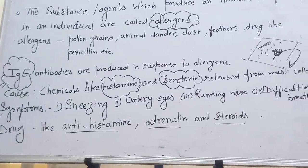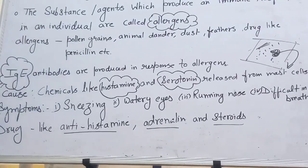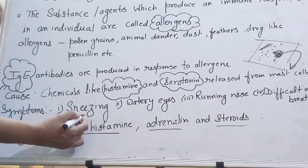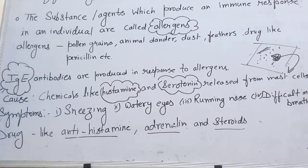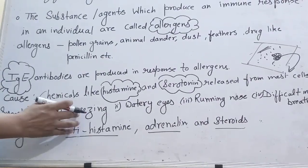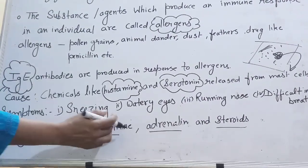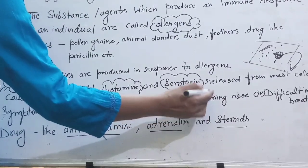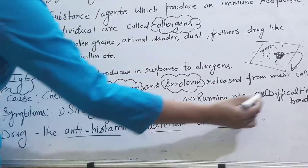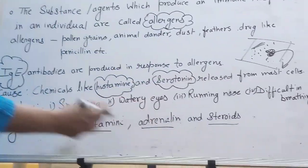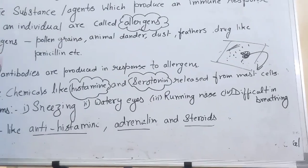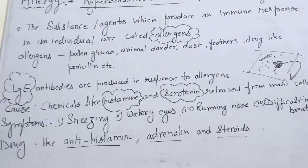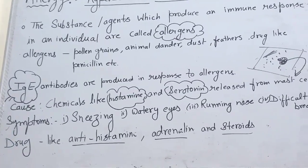What are the symptoms? It depends on the allergen and the person. Symptoms include sneezing — continuous sneezing, sometimes 30 to 40 times. Also watery eyes — water coming from the eyes — running nose, water coming from the nose, and difficult breathing. At that time the person feels difficulty in inhalation and exhalation.